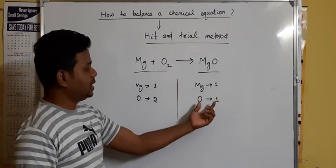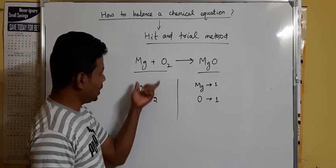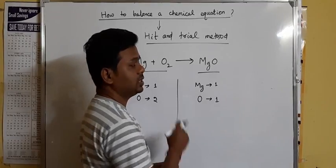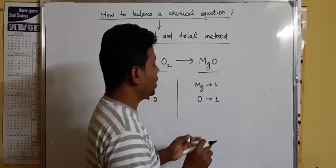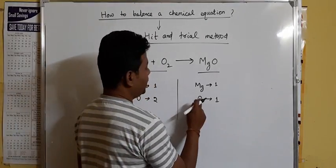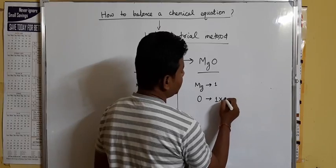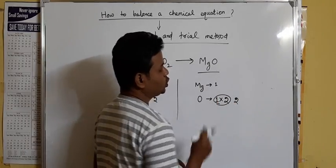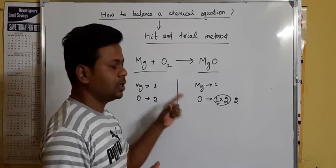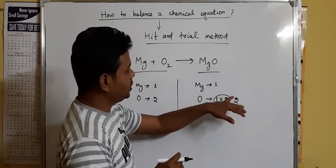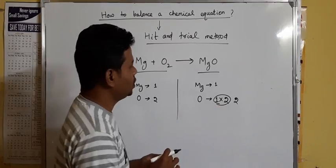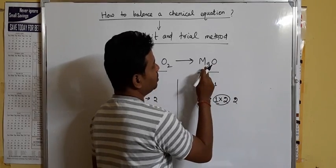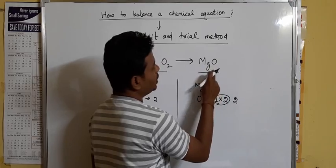On the product side oxygen is one, but on the reactant side it is two. We have to make the same number of oxygen atoms on both sides. To do this, we multiply a number. If we want to make the oxygen atom count two on the product side, we multiply two in front of MgO. However, MgO is a compound — magnesium and oxygen are not two different separate atoms here.